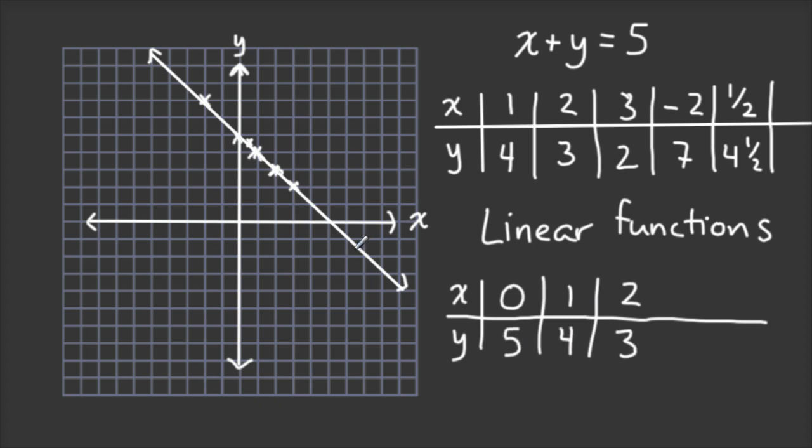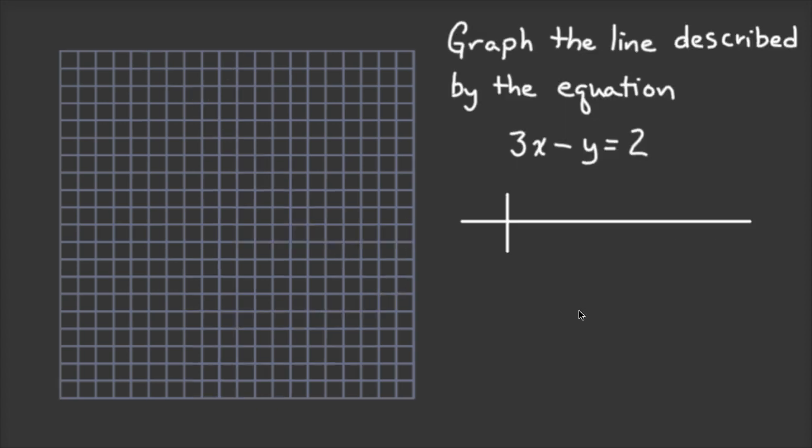Let's do another example. Our new equation is 3X minus Y equals 2, and we're going to graph the line described by this equation. Now, I'm going to plug in values for X, remember we'll use 0, 1 and 2, but if I do that to this equation, I'm going to have to constantly rearrange the equation in order to figure out what Y is.